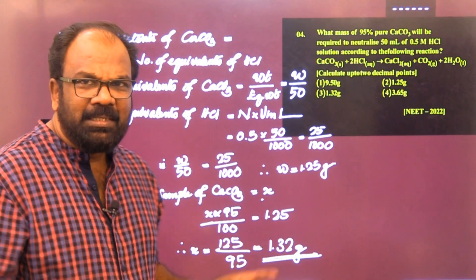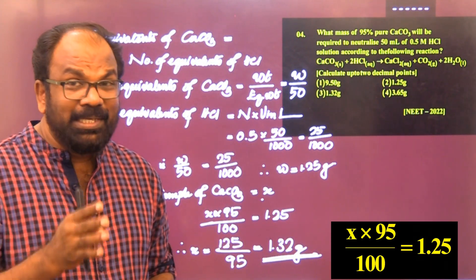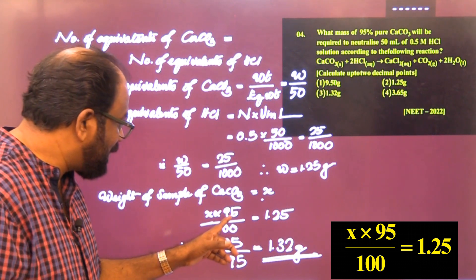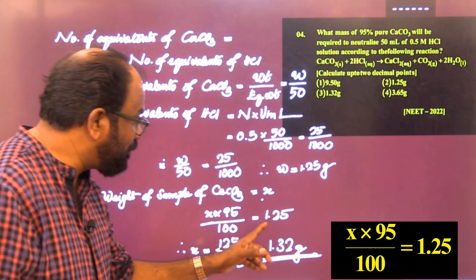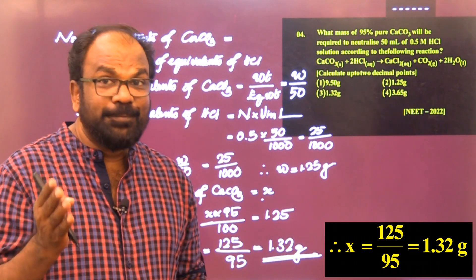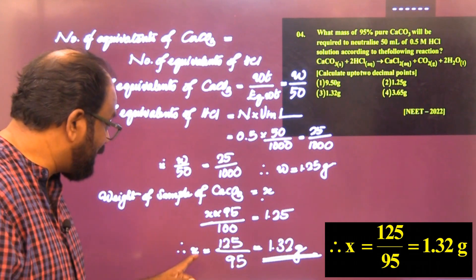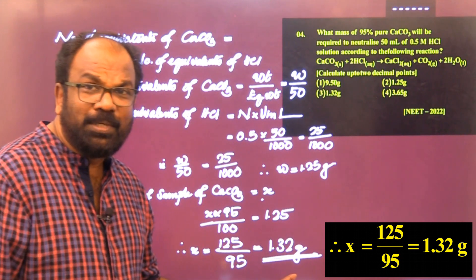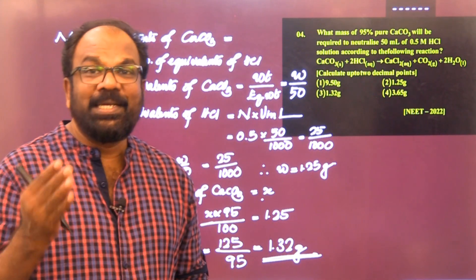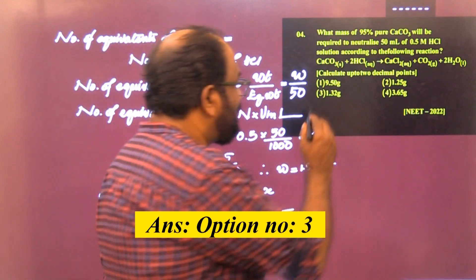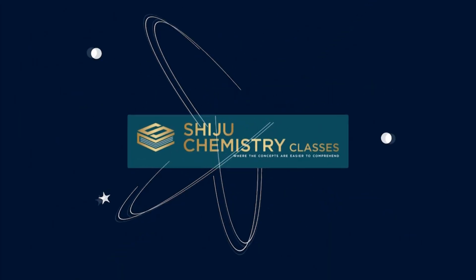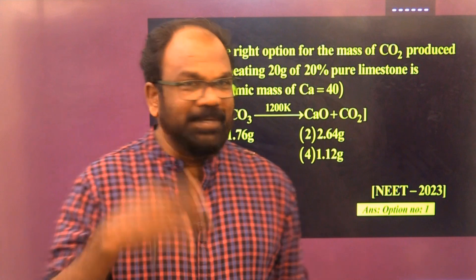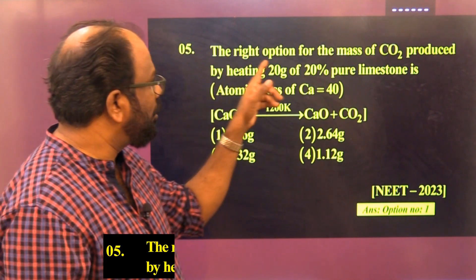But we need the mass of the sample of CaCO₃, say x grams, which has only 95% purity. So 95% of x = 1.25 g, therefore x = 125/95 = 1.32 g. The answer is option 3.